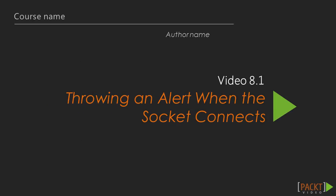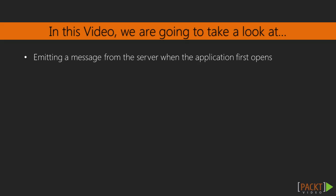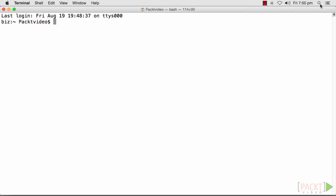This is the first video: throwing an alert when the socket connects. In this video, we will emit a message from the server using Socket.IO when the application first opens. Apache Cordova is a platform for building native mobile applications using HTML, CSS, and JavaScript. It basically wraps your entire application in a web view and exposes certain native events to the application through JavaScript.